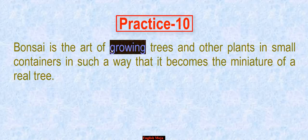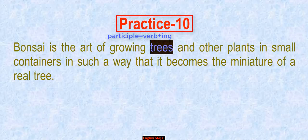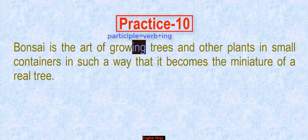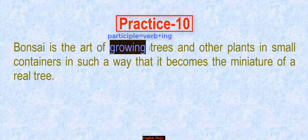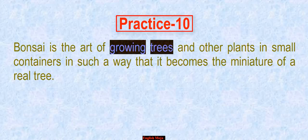If you have advanced learners, you can say that the 'growing' term is a participle, which means participle. You can say that the noun is post-modified by a participle. You will see that it is post-modified. This is the next class.